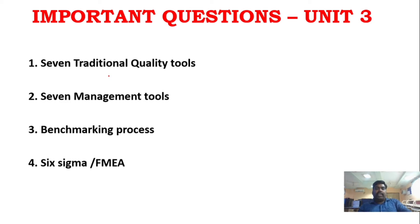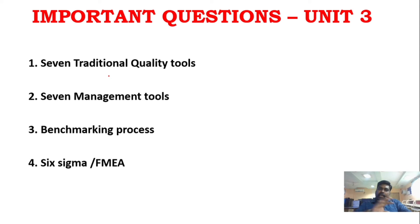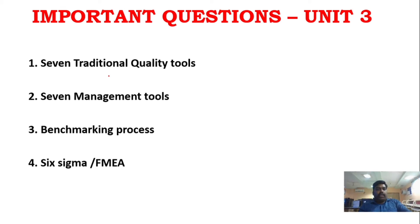Unit 3, as I said, only 4 questions. The 7 traditional quality tools and 7 management tools are key — management tools are a good repeat question. Benchmarking and Six Sigma are very important; Six Sigma has appeared in Part C in 2 to 3 exams. If you study 4 questions, you can use them for Part C as well.